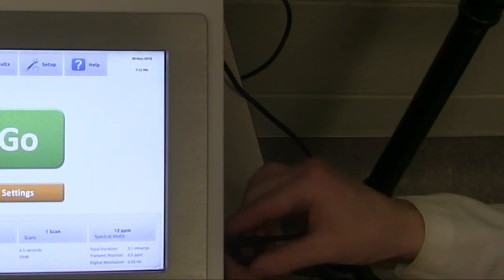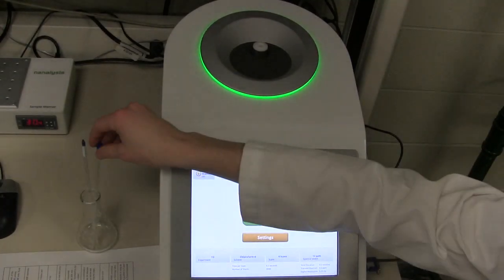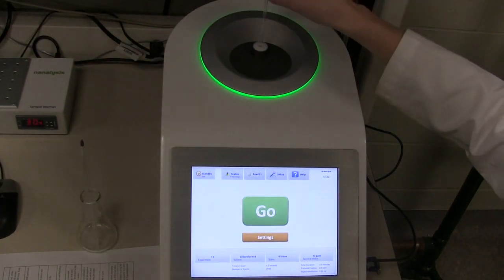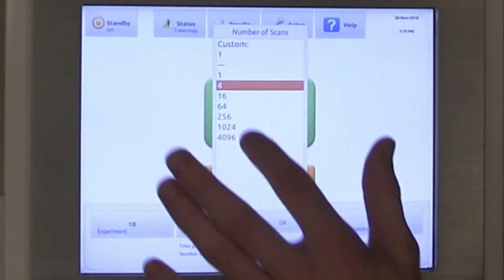Insert your USB stick into the port on the right side of the instrument. Insert your sample NMR tube. Set the number of scans and then press go to start the measurement.